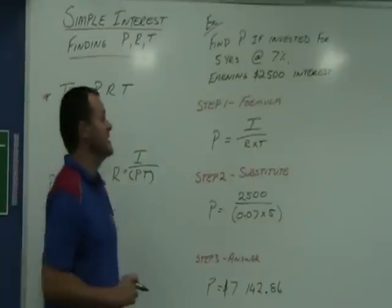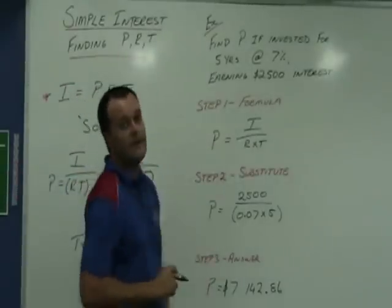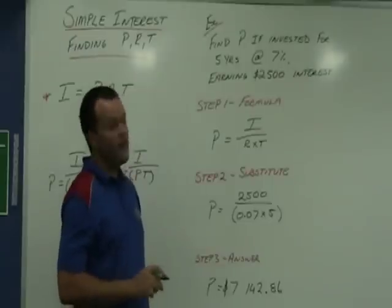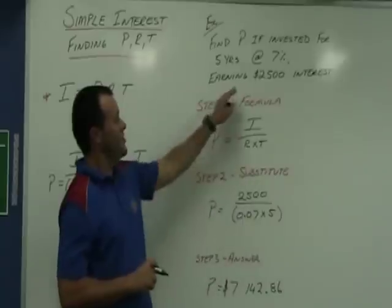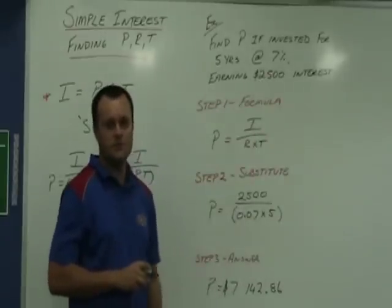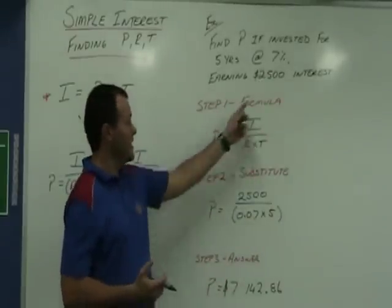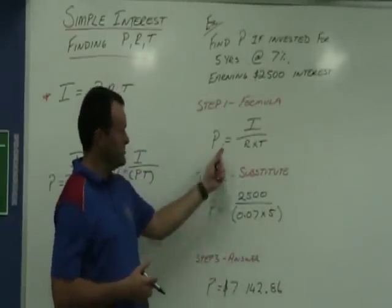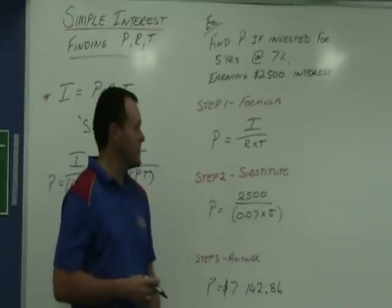Let's look at a couple of examples. First one, find the principle if it's invested for five years at 7% earning $2,500 interest. So, step one, formula - we're finding the principle. So, that's interest divided by rate times the time.